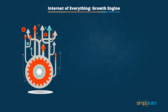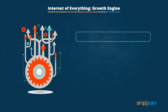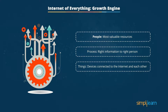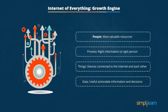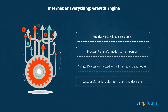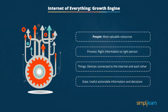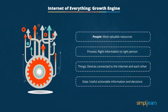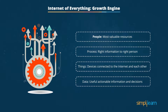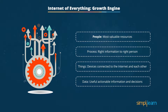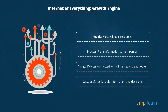The Internet of Everything comes with a growth engine for any organization. It includes people as the most valuable resources, the process of making the right effort, things that include physical devices and objects, and data taken from sensors to make actionable insights for decision making. People, process, things, and data are the growth engine elements that give companies an edge in the digital transformation world. With data privacy and transparency mechanisms, every organization must follow internet ethics and compliance.